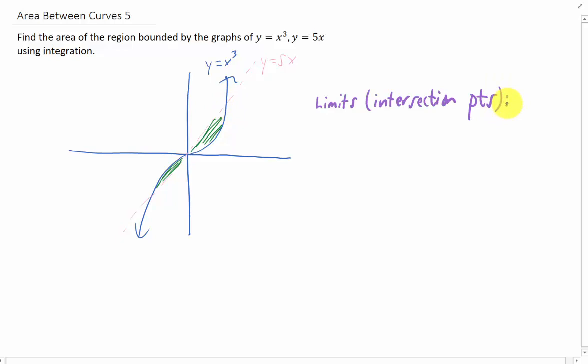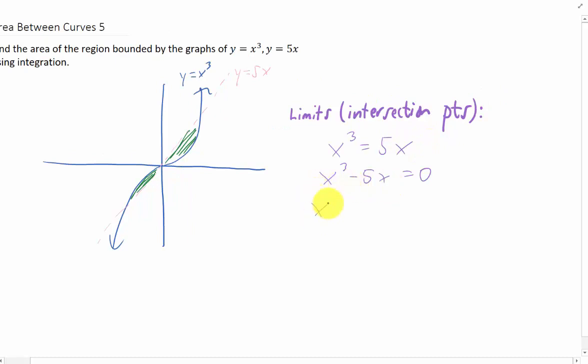So in order to find our limits, we find our intersection points by taking the two functions and setting them equal to each other. We can factor an x out. We get one intersection point of x equals 0. Of course, we knew that. The other two intersection points come from this factor. We're going to get plus or minus the square root of 5.